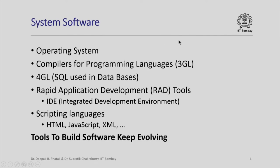First, system software. Whenever we use a general purpose computer, we need an operating system to manage the activities of that computer. An operating system is a specially written software which manages the computer system. It comprises several elements — facilities to manage the memory, storage, and processing of various programs. You will be familiar with Microsoft Windows, for example, which is a popular operating system.